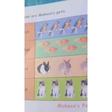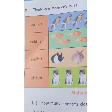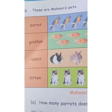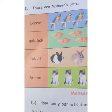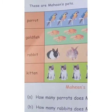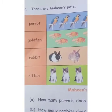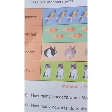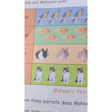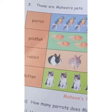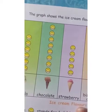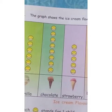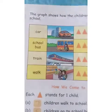In this way you are going to do page number 224. These are Maheen's pets: parrot, goldfish, rabbit. Under this there are some questions and you are going to answer them — how many parrots does Maheen have, how many rabbits she has — simple counting questions. You are going to do pages 224, 225, 226, and 227 yourself. It is very simple.